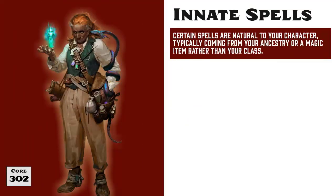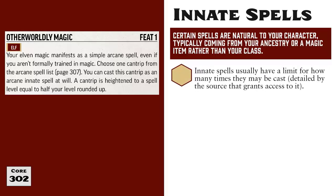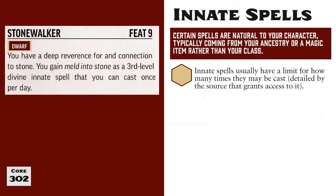Innate spells are another special type of spell. These spells are often considered to be natural talent, and are usually granted by a character's ancestry or by an item, allowing a character to cast spells without belonging to a spellcasting class. For example, an elf who chooses the Otherworldly Magic feat can cast any one arcane cantrip as an innate spell — representing a natural talent for magic that has nothing to do with their class. They can be a fighter and still cast a single cantrip thanks to this feat. The ability that granted the innate spell will tell you how often you can cast it; Otherworldly Magic lets you cast it at will, while a dwarf with the Stonewalker feat can only cast their innate spell, Meld into Stone, once per day.